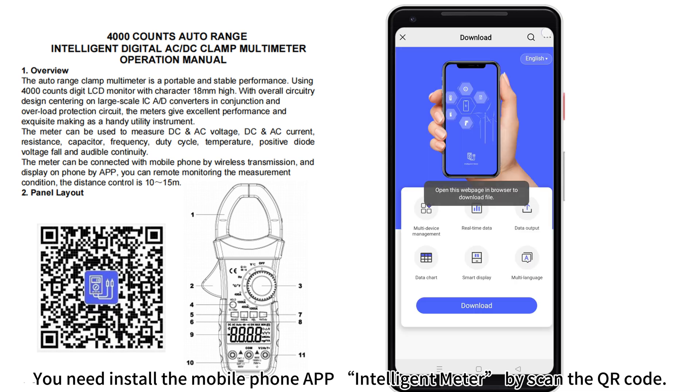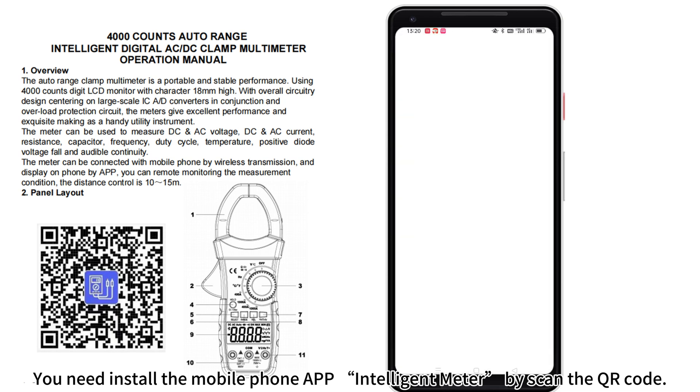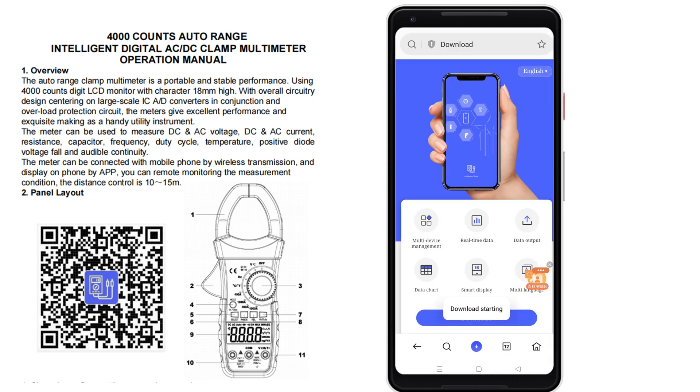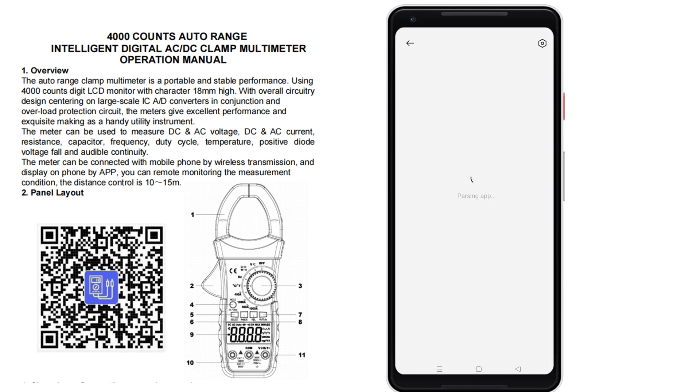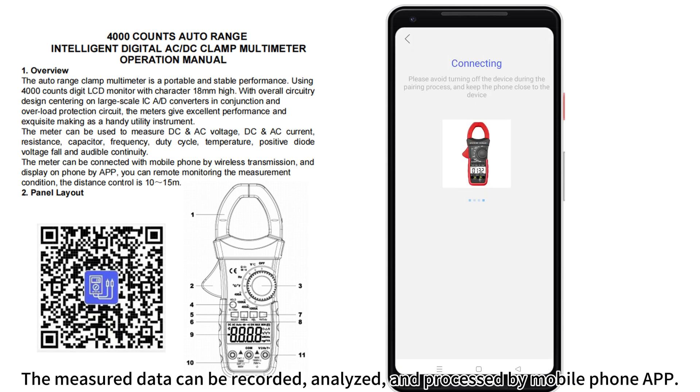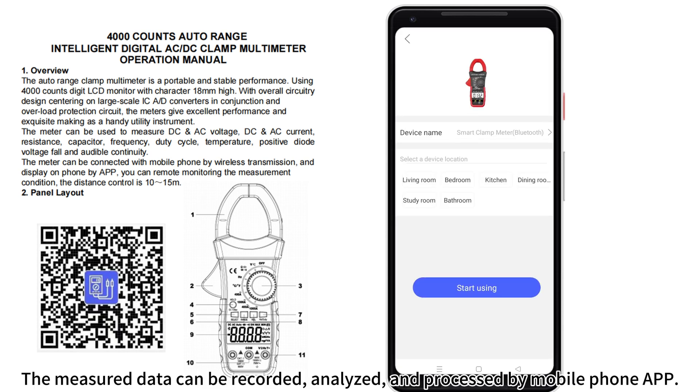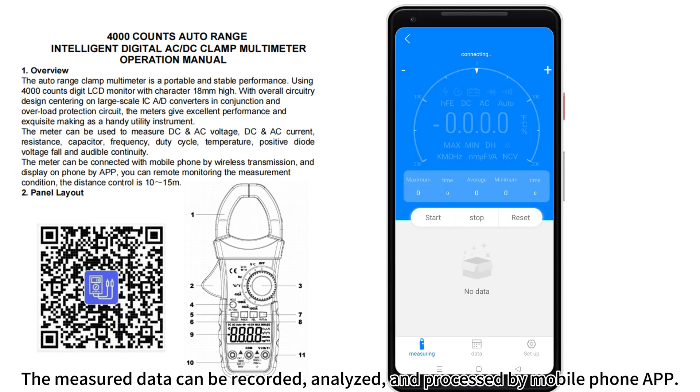You need to install the mobile phone app Intelligent Meter by scanning the QR code. The measured data can be recorded, analyzed, and processed by the mobile phone app.